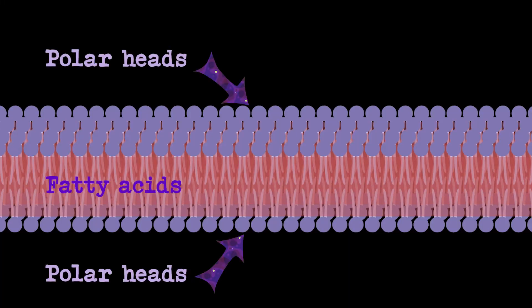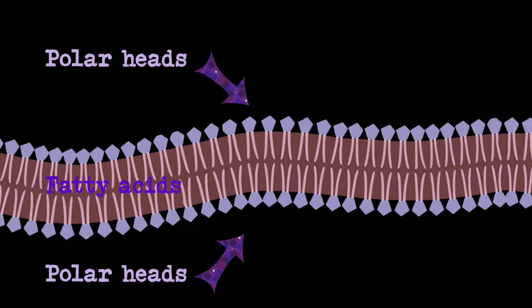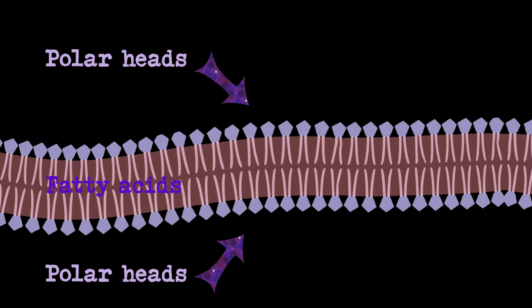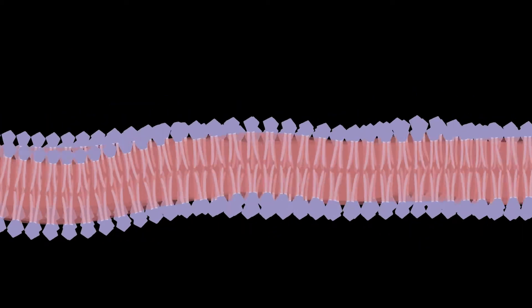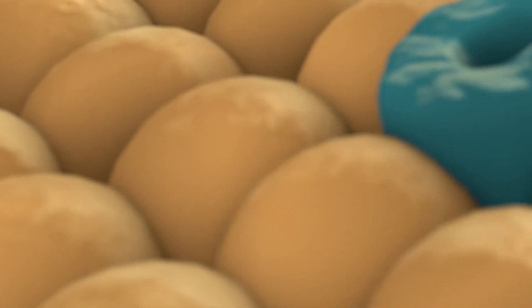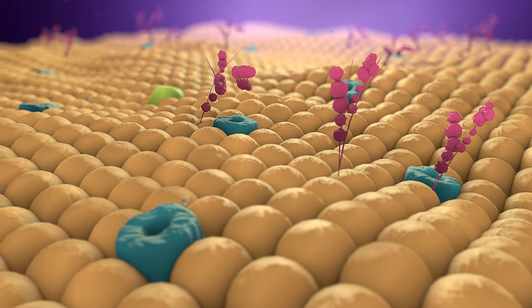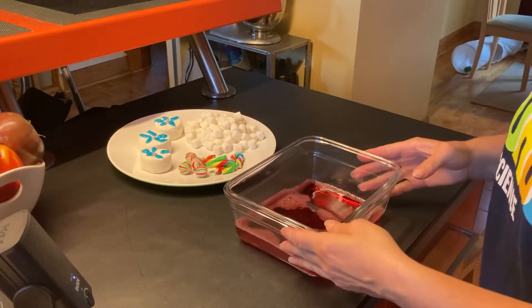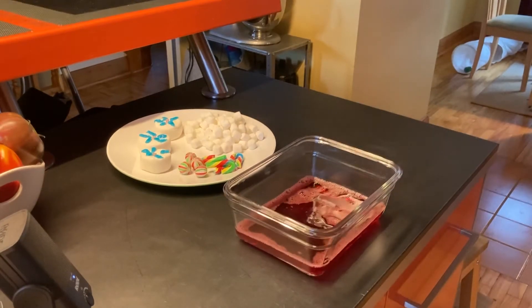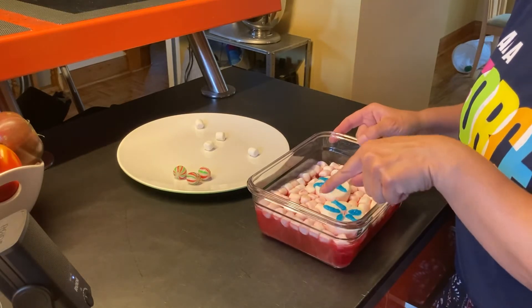Membrane fluidity and permeability mainly depend on the fatty acid tails portion of the bilayer. In contrast, except for particular cases, polar heads have only a minor influence on membrane fluidity and permeability. In this video we will illustrate the fatty acid layer of the membrane with jello, while we represent the polar head portion with miniature marshmallows.